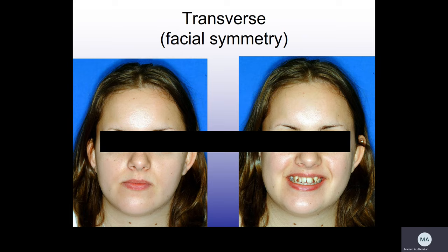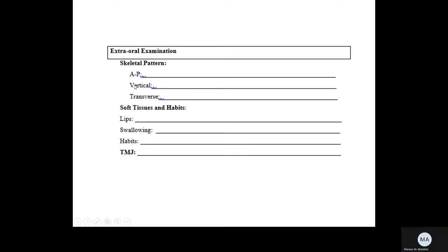Finally, we look at facial symmetry. There is no perfectly symmetrical face, but there is acceptable facial symmetry versus obvious asymmetry — like this case where the chin is pointing to the right, so we write facial asymmetry with the chin pointing to the right. Otherwise, we record acceptable facial symmetry. To summarize the vertical: write whether the lower facial height is average, increased, or reduced, then add the Frankfurt mandibular plane angle. For the transverse: note acceptable facial symmetry or describe any asymmetry.